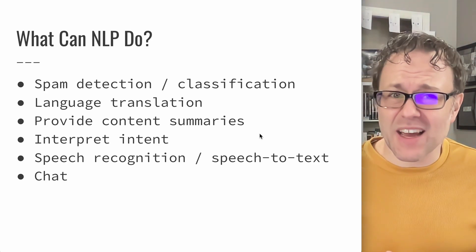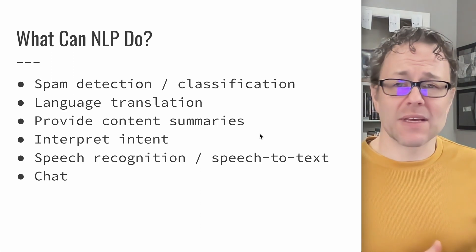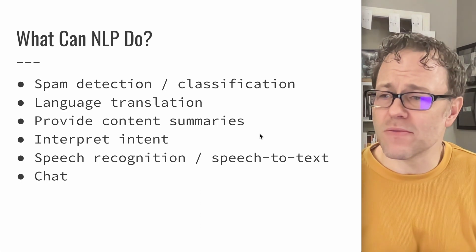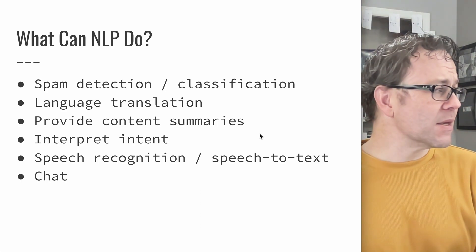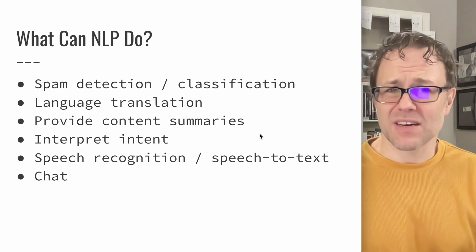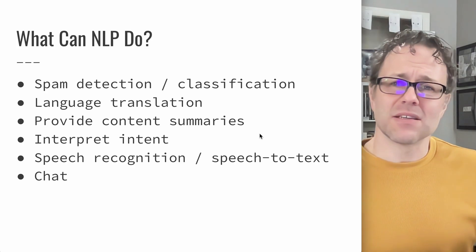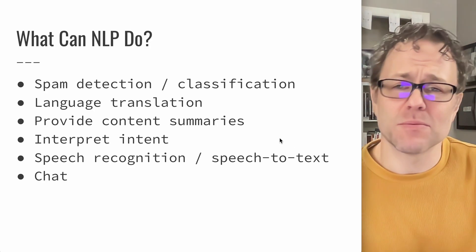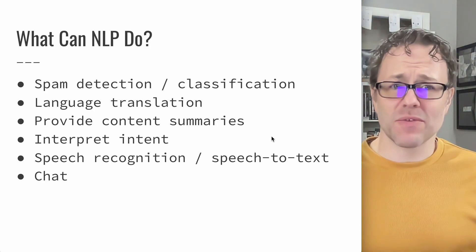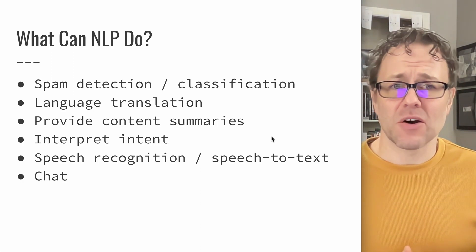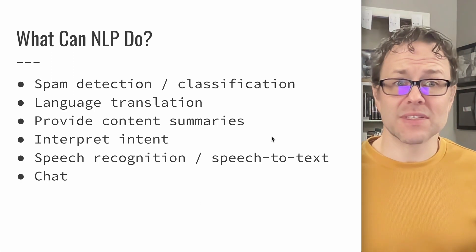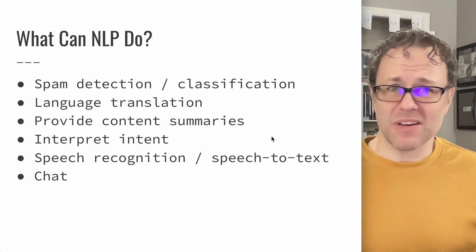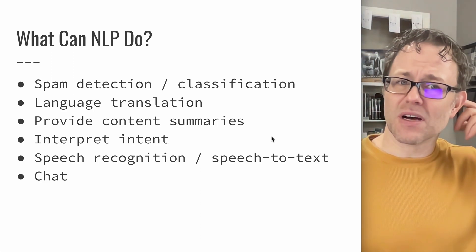You can detect spam — classifying text as a reasonable message or spam. You can use NLP for language translation, and there have been big developments here recently: using neural networks and the latest NLP techniques, we can do much better than rules-based translation from the past. You can also use it for content summaries. If you have a page of text or a chat conversation, summarizing it lets people catch up quickly. Some chat tools now summarize threads of 20–40 exchanges into just a few sentences.